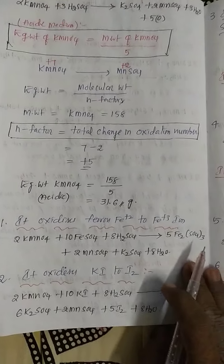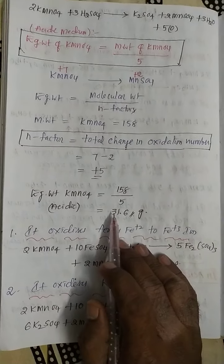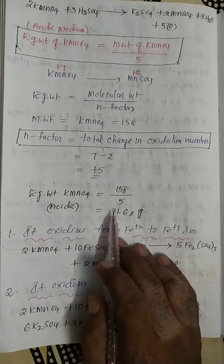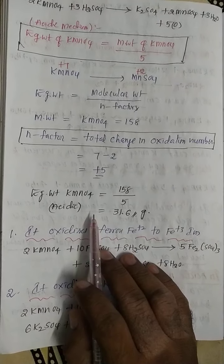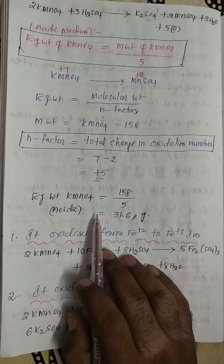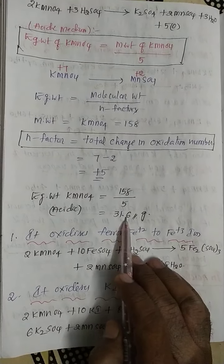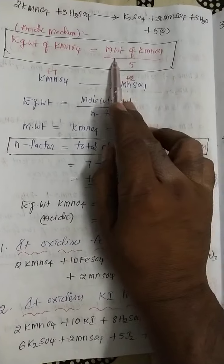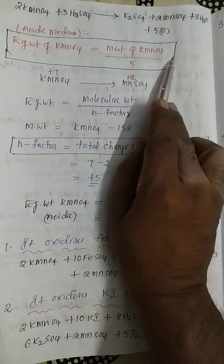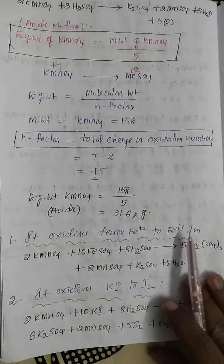Students, as already discussed in the previous video, how to calculate equivalent weight of KMnO4 in acidic medium. The equivalent weight of KMnO4 in acidic medium is 31.6 grams. This is calculated using the molecular weight of KMnO4 divided by the n-factor value.